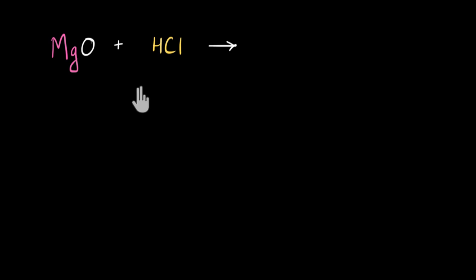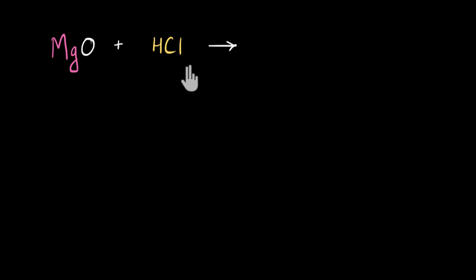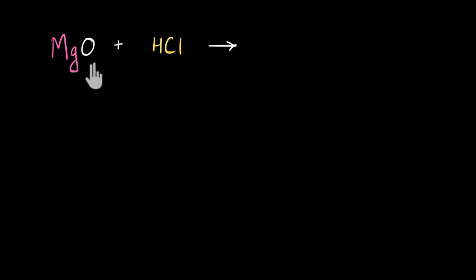Let's begin with an example. Here I have magnesium oxide. Magnesium is a metal and I'm taking its oxide, so I'm reacting a metallic oxide with an acid, HCl. Can you pause the video and try to guess what the products are going to be formed? And based on the chemical reaction, can you also guess what is the nature of magnesium oxide?